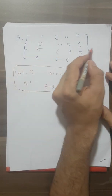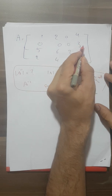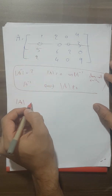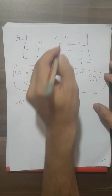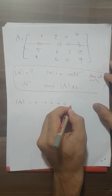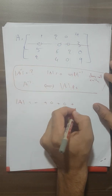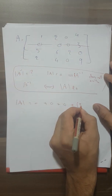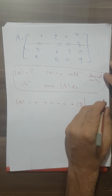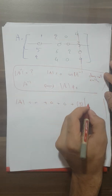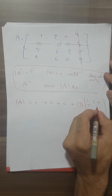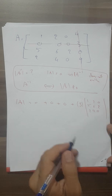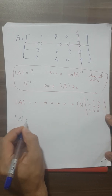We have a 3×3 matrix and we are going to use the second row expansion. Because multiplying by zero gives zero, and multiplying by zero again gives zero. Don't forget the sign pattern: positive, negative, positive, negative, positive — so positive three. The remaining submatrix entries are 1, 2, 0, 5, 6, 2, 2, 4, 0.